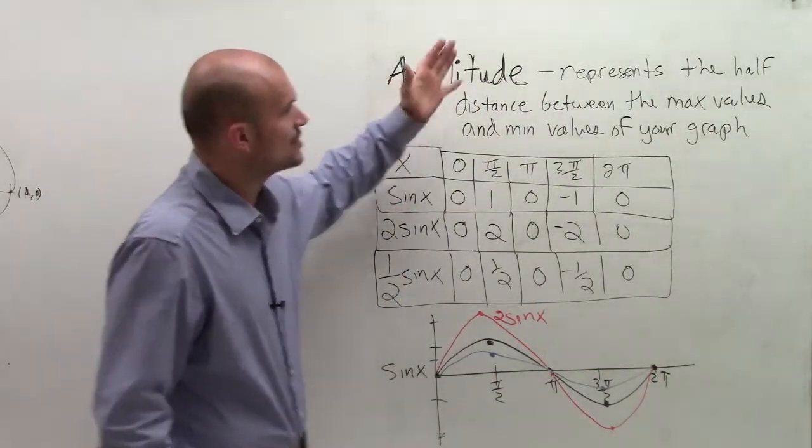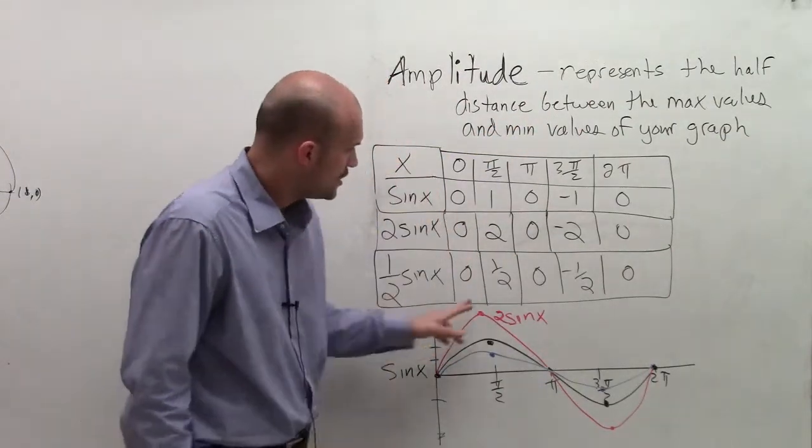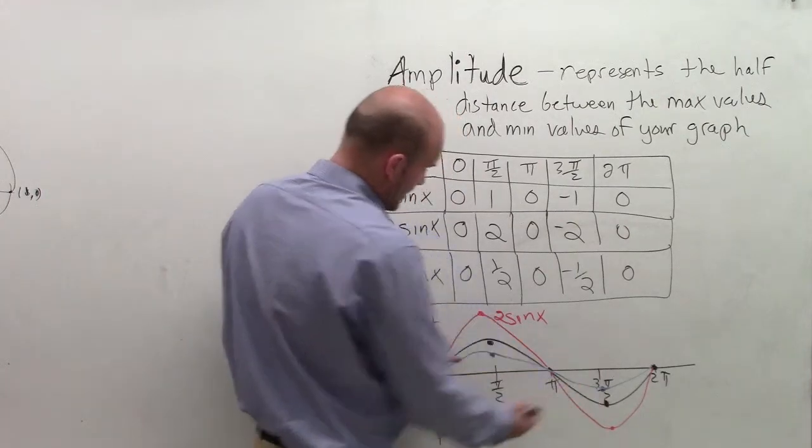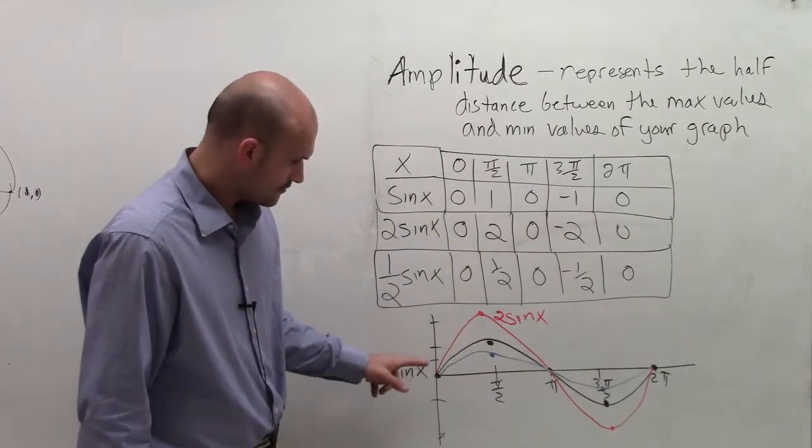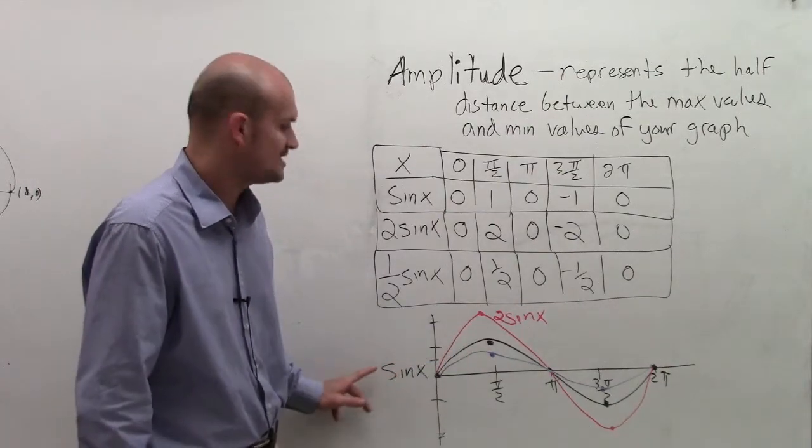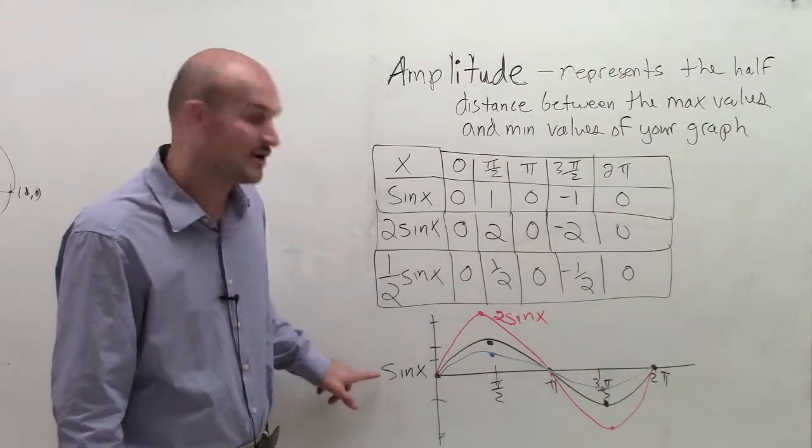So ladies and gentlemen, the amplitude just represents the half distance between the max values and the minimum values. So you can see here, the difference between my max and my min is 2. So the half distance, the amplitude of sine of x is equal to 1, theoretically, which would actually be what it's multiplied by, your a, which is 1.